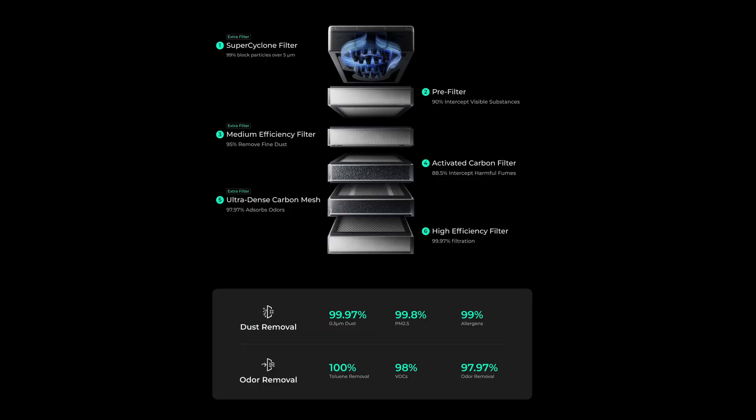Here are the six stages for this filtering system. First, you have the Super Cyclone filter. This will block 99% of particles over 5 microns. If you've ever done CNC milling, a lot of people will put a cyclone-type attachment ahead of the extractor to actually trap those large particles. Same concept.